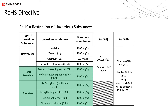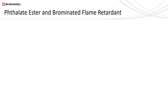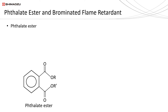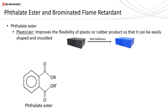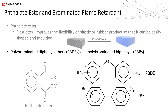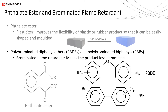Let me first briefly go through the purpose of adding these two groups of substances in electrical products and why the concentration of both substances had to be controlled and regulated. Those regulated phthalate esters are classified as plasticizers. The purpose of adding plasticizers is to improve the flexibility of plastic or rubber so that it can be easily shaped and molded. Without plasticizers, it is impossible to mold the plastic into the shape you desire, since most raw plastic materials may be too rigid. Polybrominated diphenyl ethers and polybrominated biphenyls are classified as brominated flame retardants. They are added to make the product less flammable, hence decreasing the ability of materials to ignite.